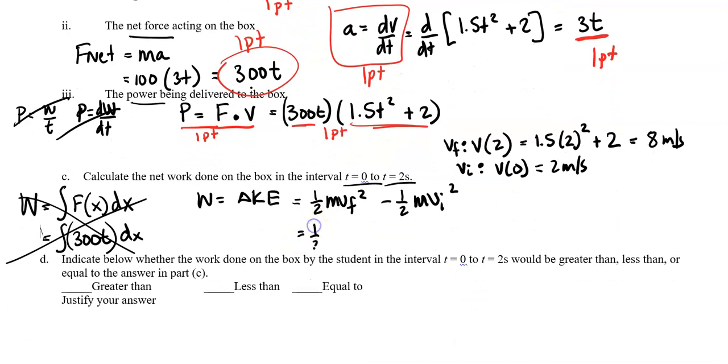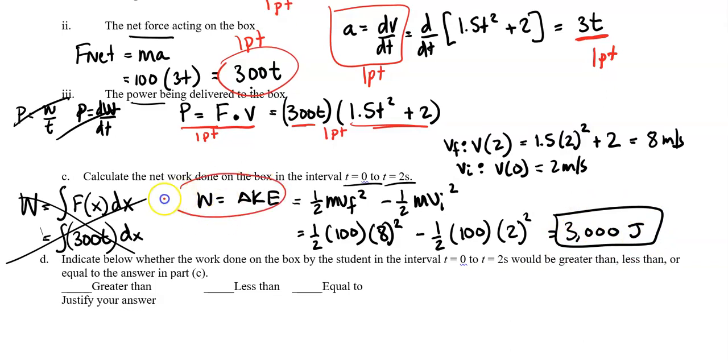Let's go ahead and plug all this stuff in. We have ½ times mass 100 times final velocity 8 squared, minus ½ times 100 times initial velocity 2 squared. Don't forget the squared. When I plugged that all in, I got 3,000 joules. Let's check the rubric. You get 2 points for using this equation, work equals change in KE. Even if you didn't know what to plug in but you wrote that equation down, you got 2 points. You got 1 point for correctly calculating the velocity at 2 seconds of 8 meters per second, and you get 1 point for a correct answer with units.